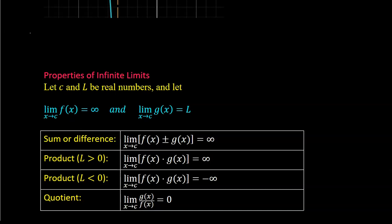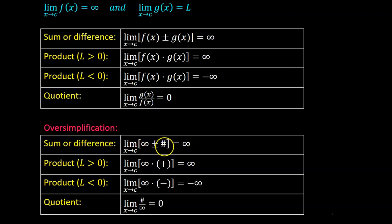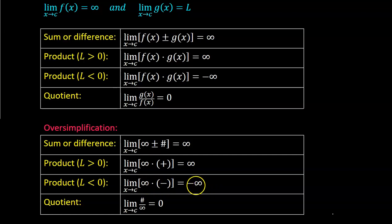Take a look at my oversimplification — this is not accurate notation, just to help you remember the rules. The bottom line: infinity plus or minus a number gives a limit of infinity. Infinity times a positive number gives positive infinity. Infinity times a negative number gives negative infinity. And a number divided by infinity gives a limit of zero.